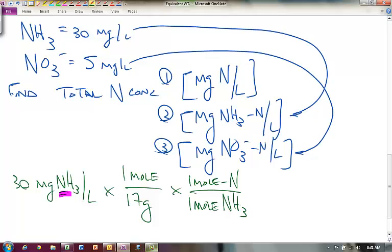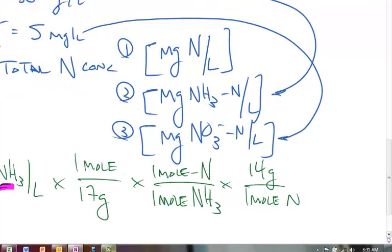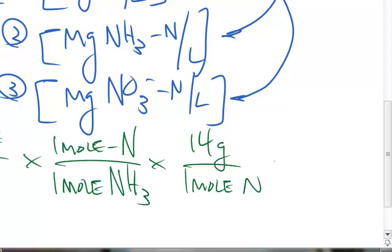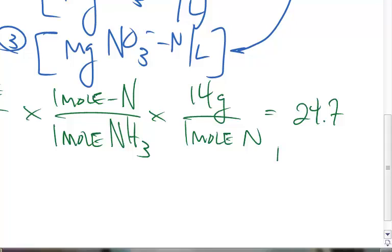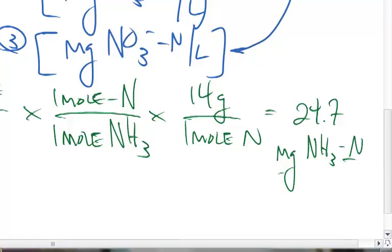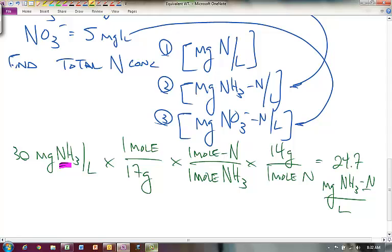Okay, so then we would times, get that one mole, nitrogen is equal to 14 grams. And we can solve that and we would get 24.7 units now are in milligrams of NH3-nitrogen per liter. So it's written as ammonia-nitrogen per liter. So we've certainly got that one solved for, that would be step number two.